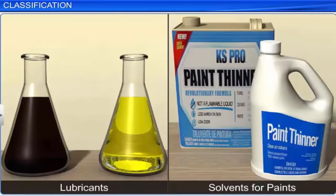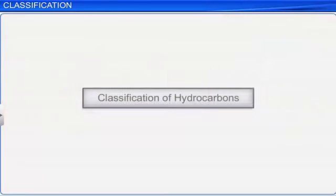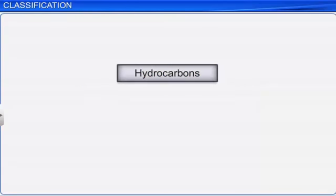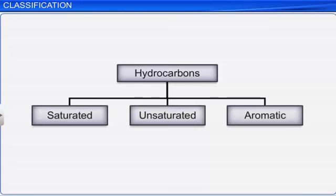Hence, we can say that hydrocarbons act as sources of energy. Now let us look at the classification of hydrocarbons. On the basis of carbon skeleton, i.e., the type of carbon-carbon bonds, hydrocarbons can be classified into three main categories: saturated, unsaturated, and aromatic hydrocarbons.